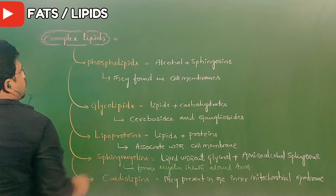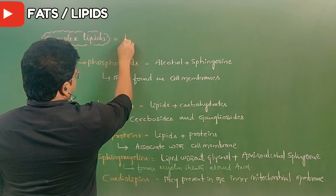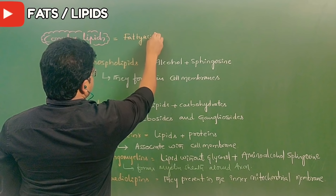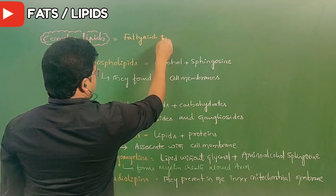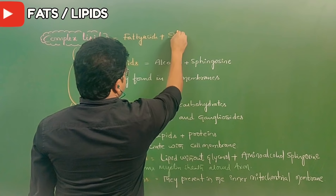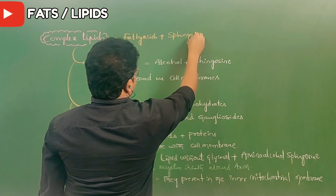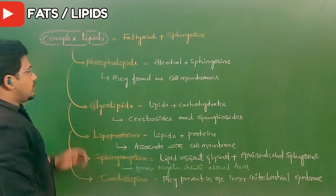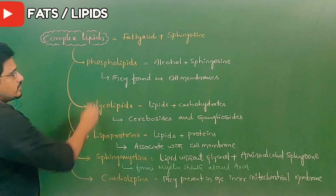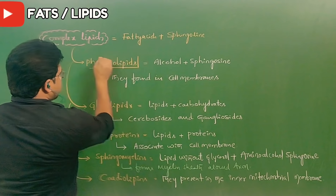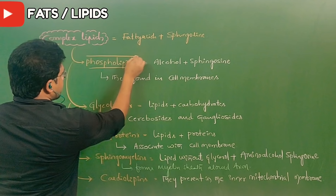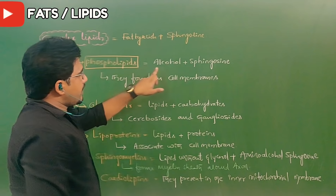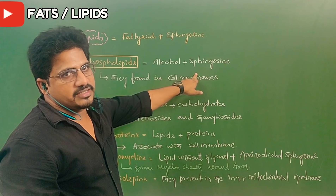Now let us see complex lipids. Complex lipids are made up of fatty acids plus sphingosine combinations. They are of five types. The first one is phospholipid. In the phospholipid, alcohol and sphingosine are present.